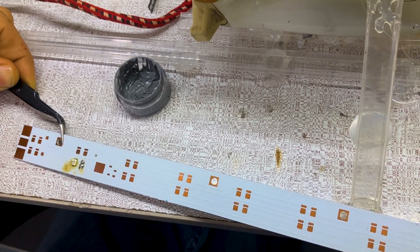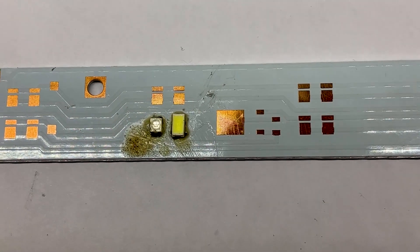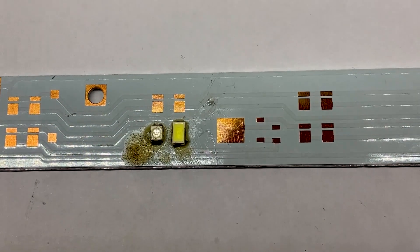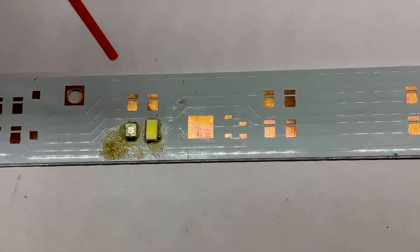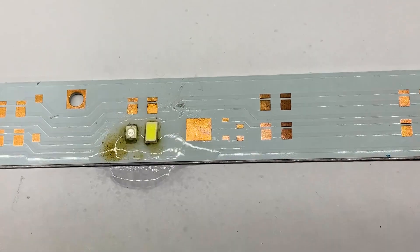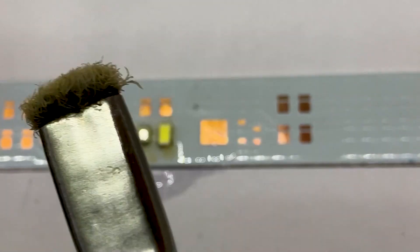So for better understanding, I solder one LED more. And after that, for cleaning you need some liquid like thinner and you need some brush like this.